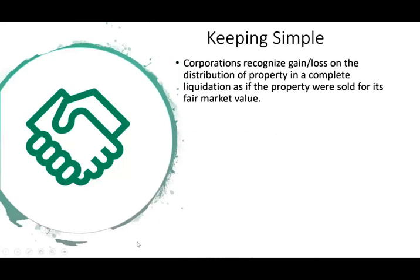Let's look at the rules. A corporation recognizes gain or loss on the distribution of property in a complete liquidation as if the property were sold for its fair market value. When the company goes out of business — that's what we mean by complete liquidation — it's as if we have sold it, and if we sold it, we have a gain or a loss. That's the general rule.